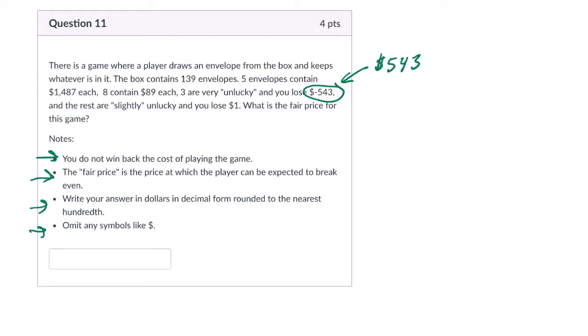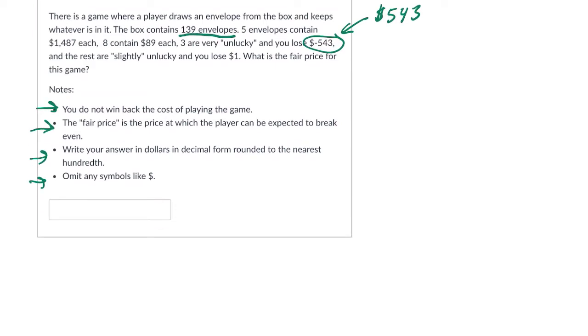So first of all, we've got 139 envelopes all together, and five contain a lot of money. So we have a 5 out of 139 chance of winning $1,487. And then eight contain $89 each. So eight out of 139. Multiply that by 89.